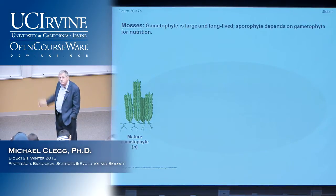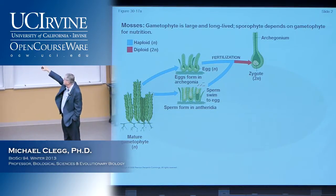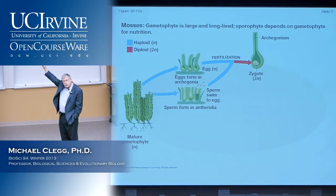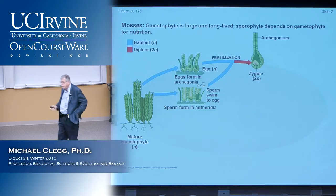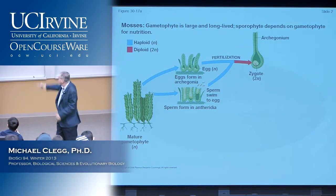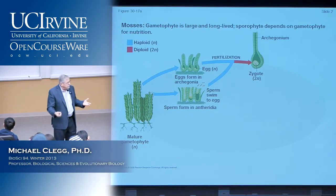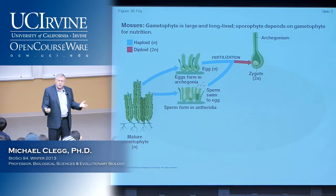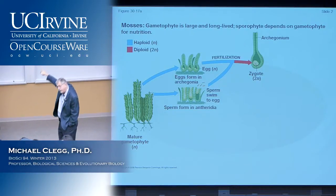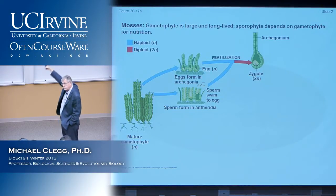Here's an example where the haploid phase in the alternation of generations is the dominant phase — this is characteristic of mosses. We begin with the mature haploid gametophyte; it produces eggs and sperm in specialized structures — the eggs in the archegonia, the sperm in the antheridia. The sperm actually swim to affect fertilization of the egg in the archegonia.